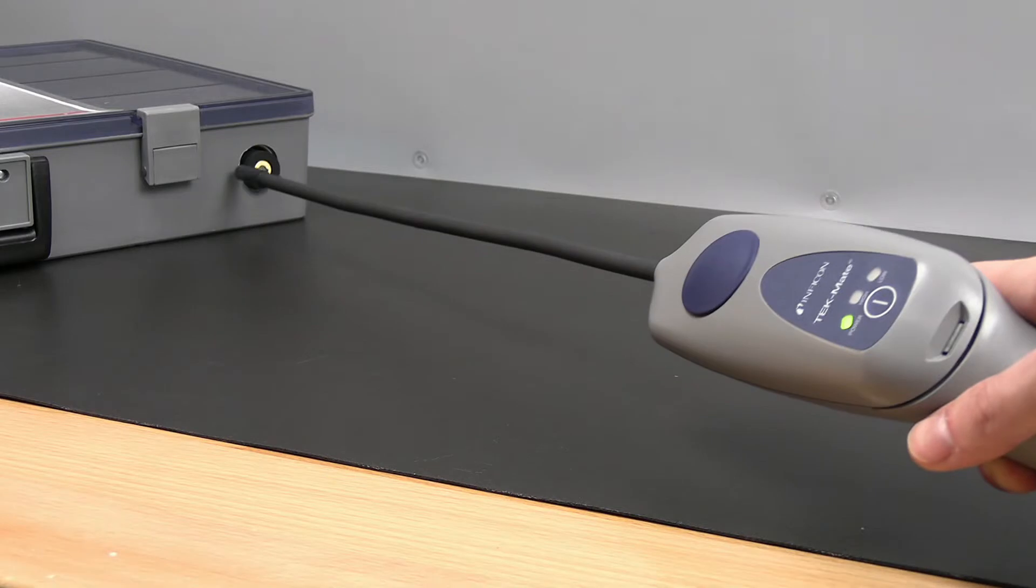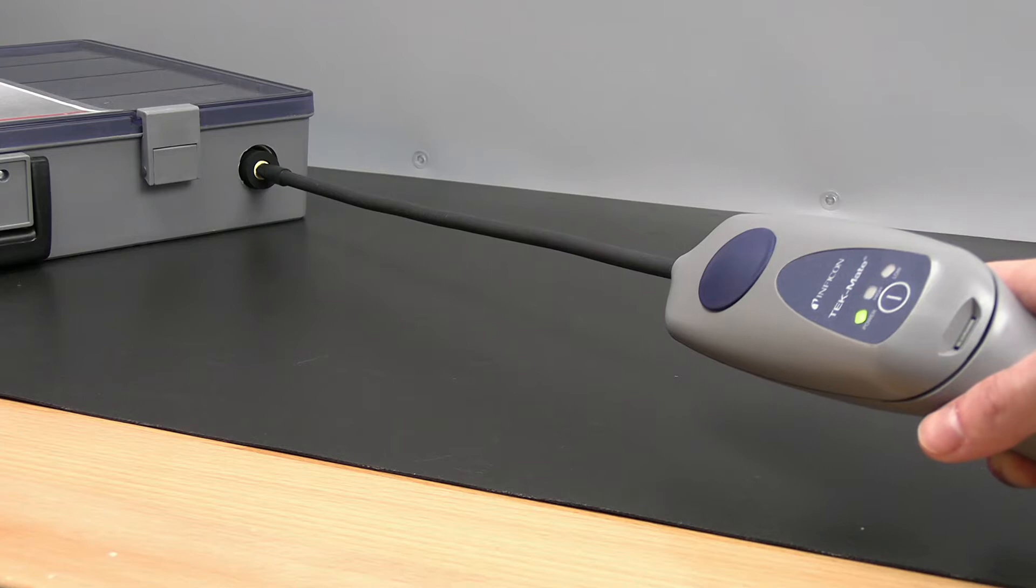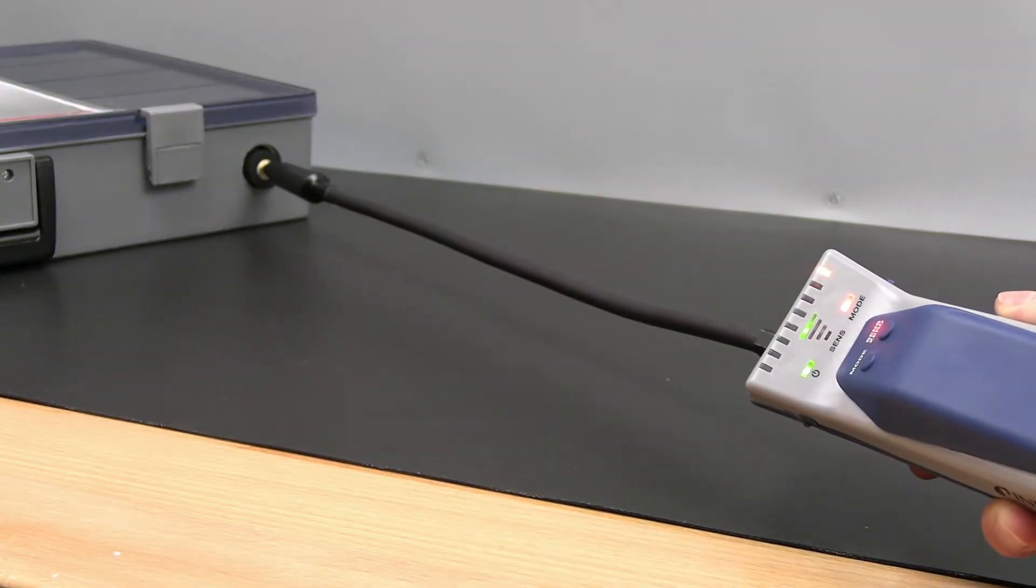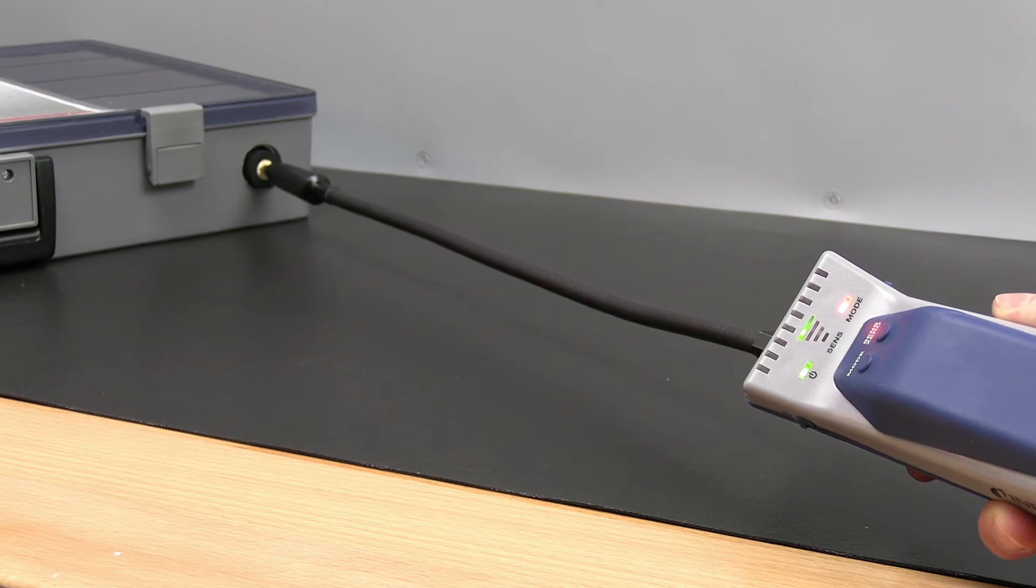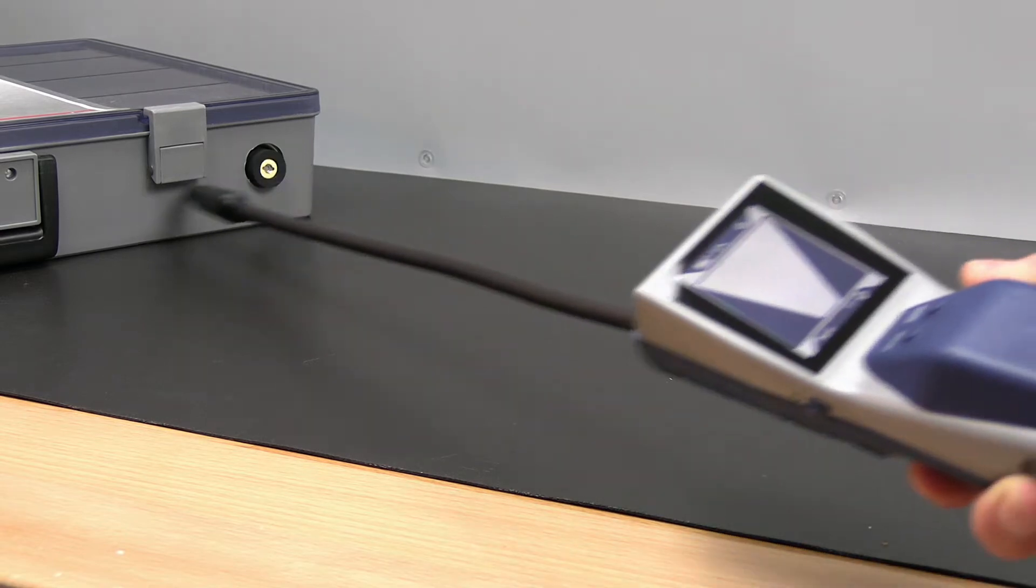In Pinpoint Mode, every couple of seconds the leak detector will automatically zero to the background refrigerant concentration. And when this occurs, either continue looking for a higher concentration of refrigerant or move to an area of lower concentration to reset that zero point.